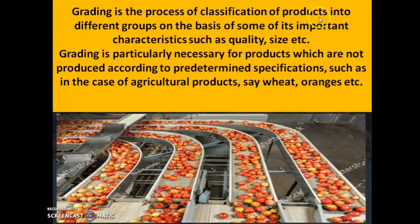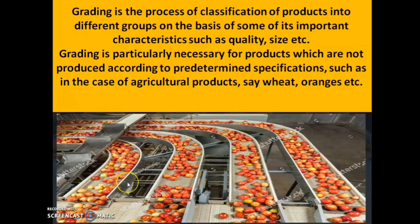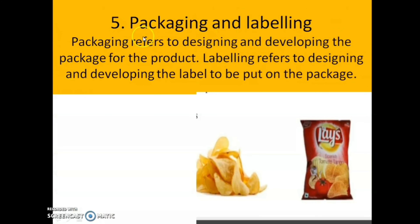Grading is the process of classification of products into different groups on the basis of important characteristics such as quality, size, etc. If you visit any factory, you may notice that agricultural products like wheat, oranges, or cashew nuts cannot have pre-determined specifications maintained. So how are they classified? They are graded — bigger apples are separated, and products are graded according to size, color, and taste. Grading is also one of the functions of marketing.